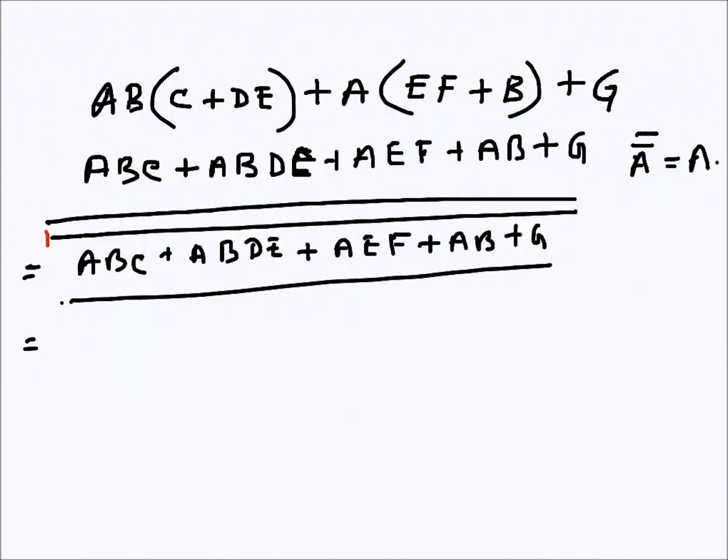With the bottom bar, I will just use De Morgan's theorem for this one. So it will become ABC here. The OR becomes AND, ABDE, and the bar comes on each of the terms, so like that.